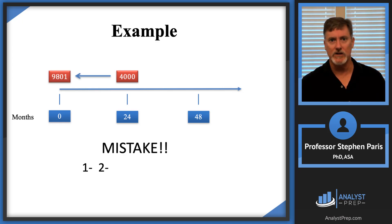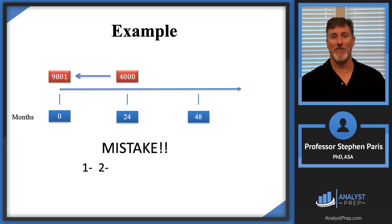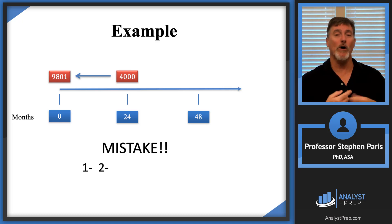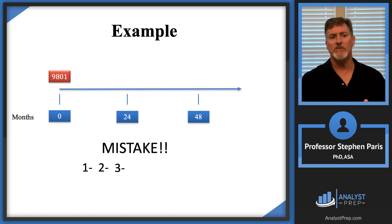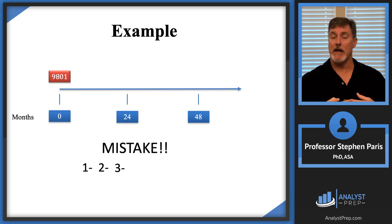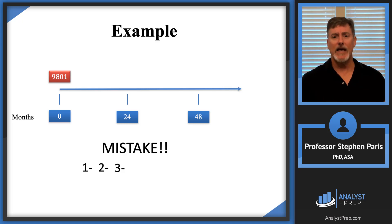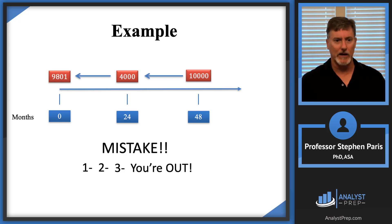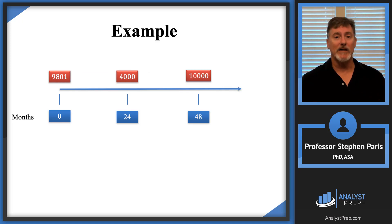A second mistake is when I see the 4,000 with an arrow going back to 9801 — that looks like 4,000 is being discounted back to 9801. But if you discount 4,000 you get a smaller number, not a bigger one, so that's even more confusing. A third mistake is putting 9801 above time zero, because 9801 is not a deposit — it's the total present value of the other payments. So there are at least three mistakes with that style of timeline. Don't draw it that way.